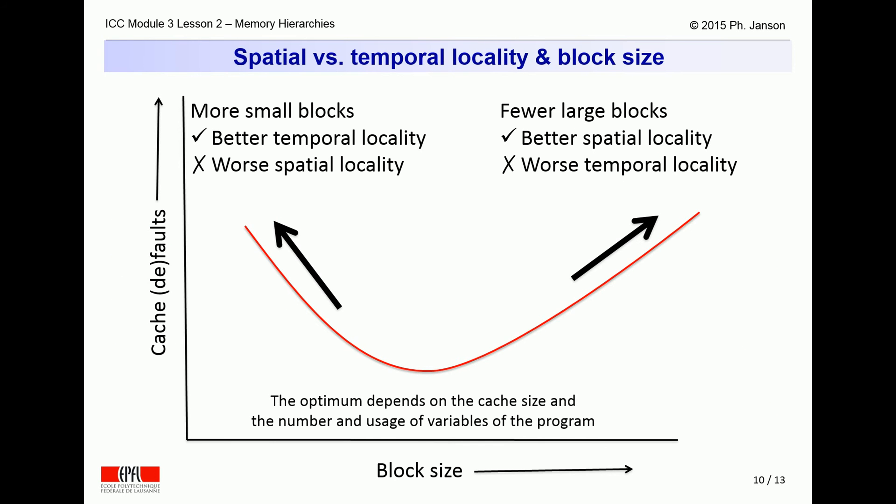Thus, one sees that for a given size cache, there is somewhere an optimal block size above and below which the number of cache faults increases. Just be aware that this optimal block size may be different for each possible program. Thus, it may seem theoretically impossible to determine one optimal block size for all programs.